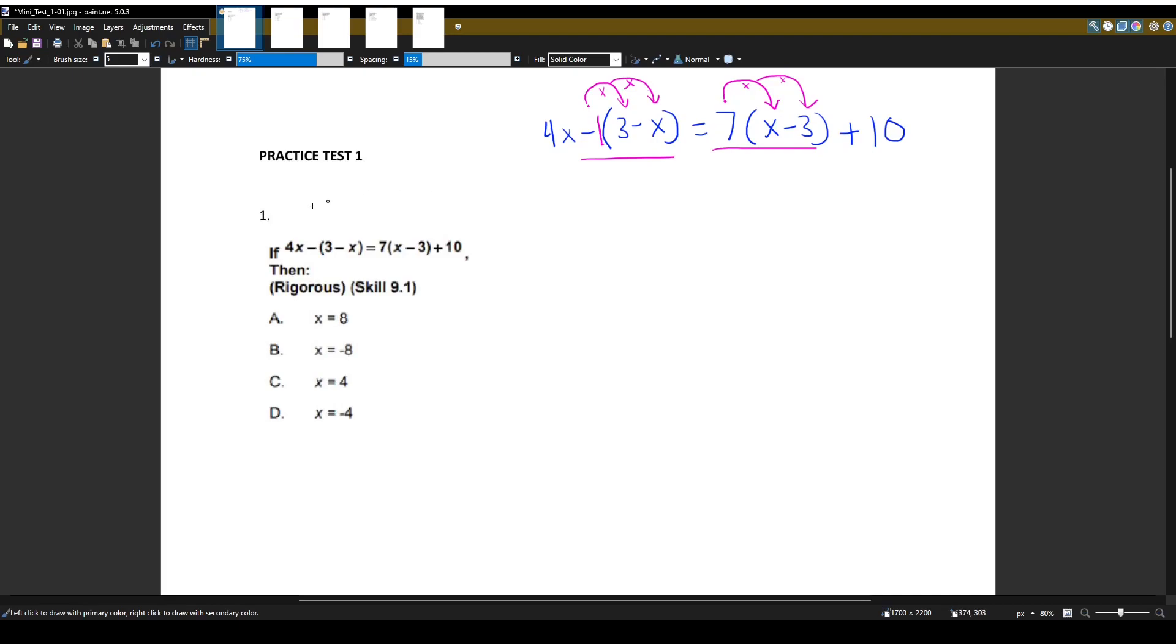And everything else we'll keep the same for now. Let's go to our new line. So 4x, we didn't do anything with that. And now we have our first distribution. Negative 1 times 3 will give us negative 3. Negative 1 times negative x will give us a positive 1x, or just x. Because negative times a negative gives us a positive. Equals 7 times x, gives us 7x. 7 times negative 3 will give us negative 21. Positive times negative gives us a negative. And the plus 10, we didn't do anything with that.